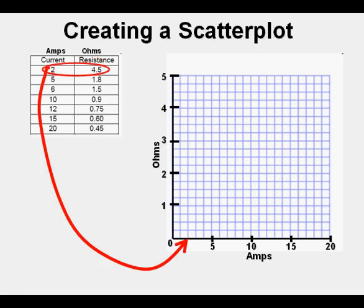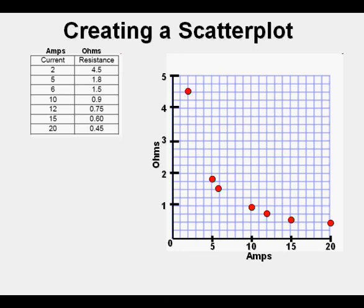Now we can plot the points. This first point we'll plot by going to 2 amps here on the horizontal axis, then going up here all the way to 4.5 ohms, then marking our point. We go through this same process and mark all the data as points.